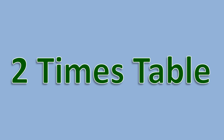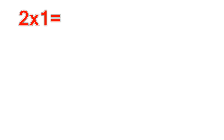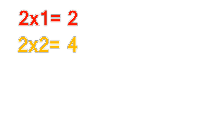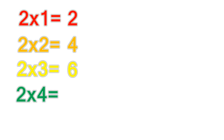2 times table. 2 times 1 equals 2. 2 times 2 equals 4. 2 times 3 equals 6. 2 times 4 equals 8. 2 times 5 equals 10.